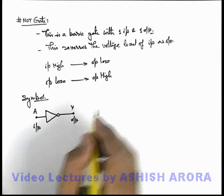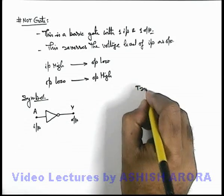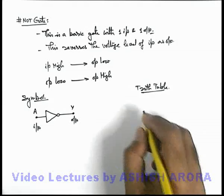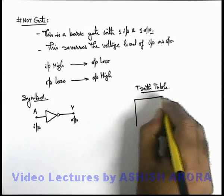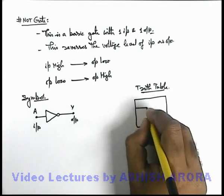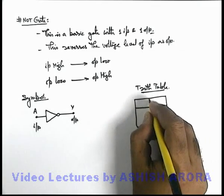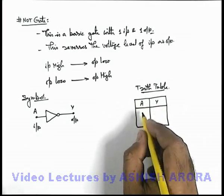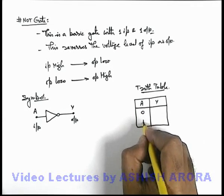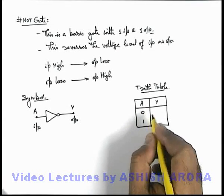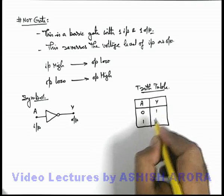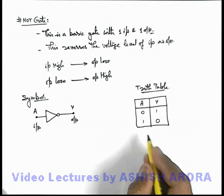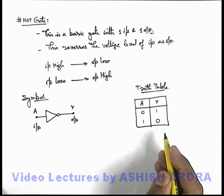Now for the input and output, if we draw the truth table for this NOT gate, which gives the input-output relation — since there is 1 input and 1 output, input can take 2 states: either zero or 1. When input is zero, the output would be 1, and when input is 1, that is in high state, output would be in low state.